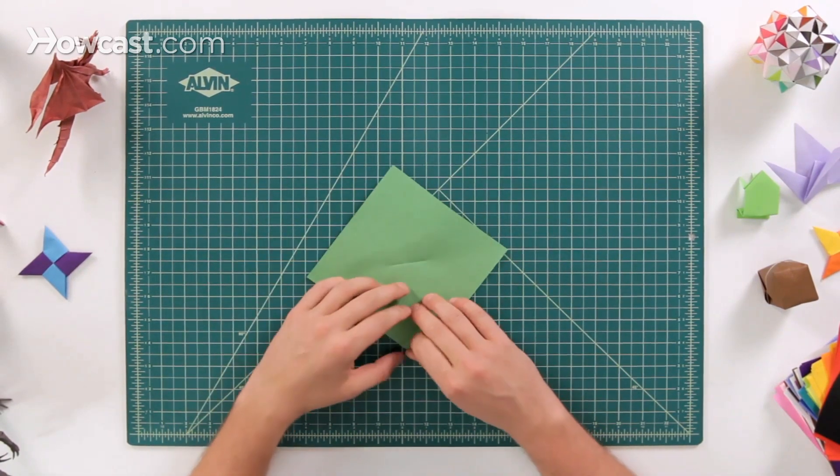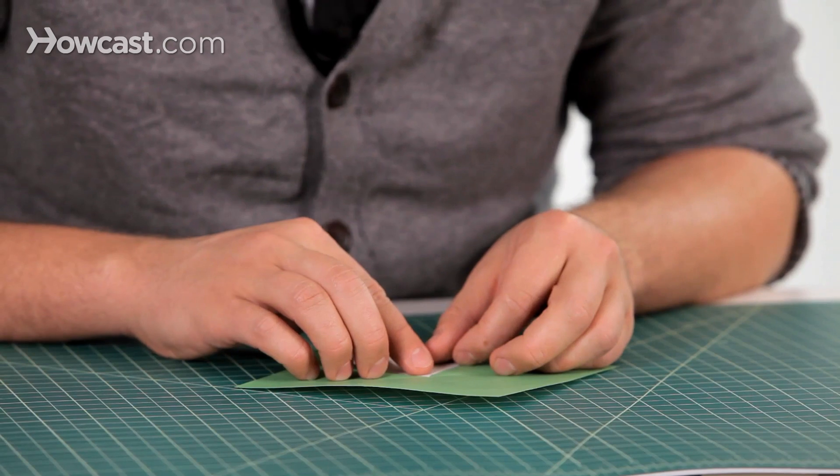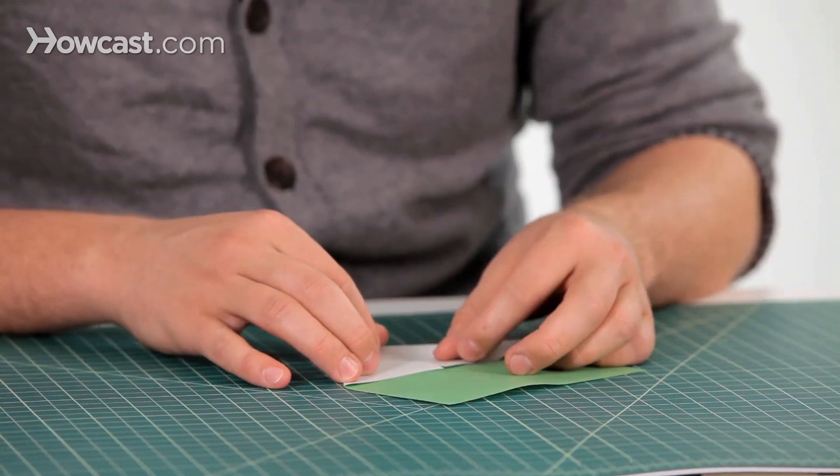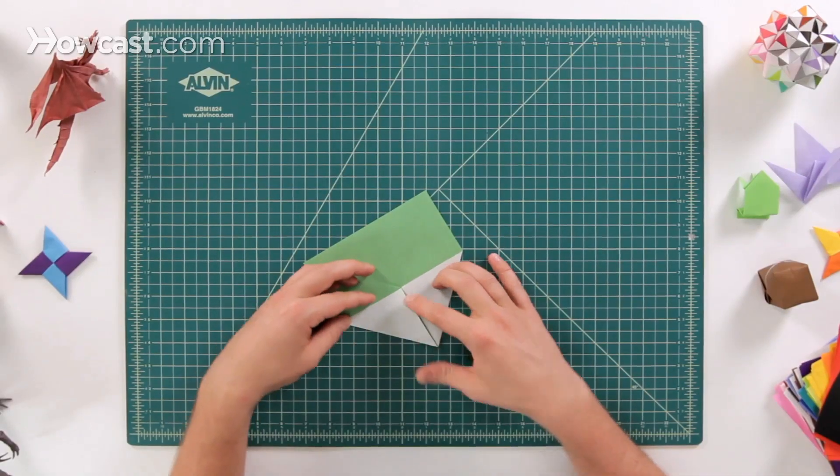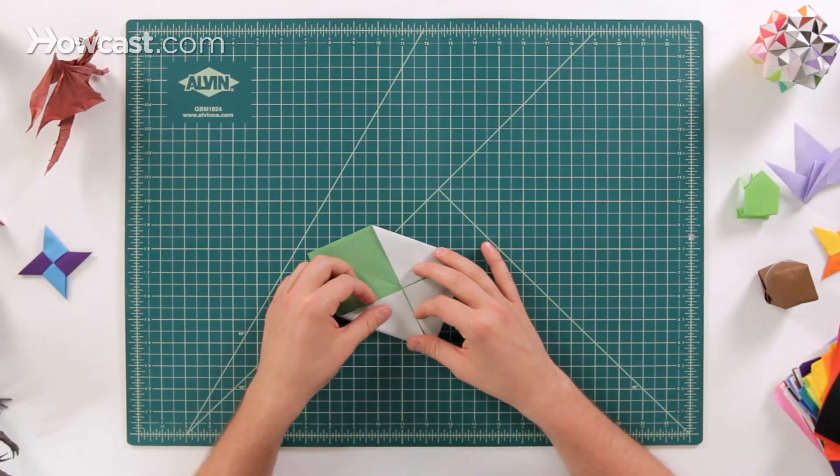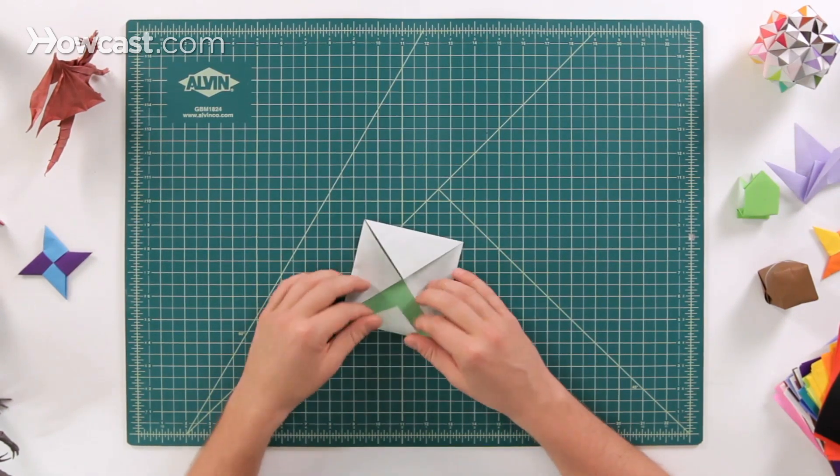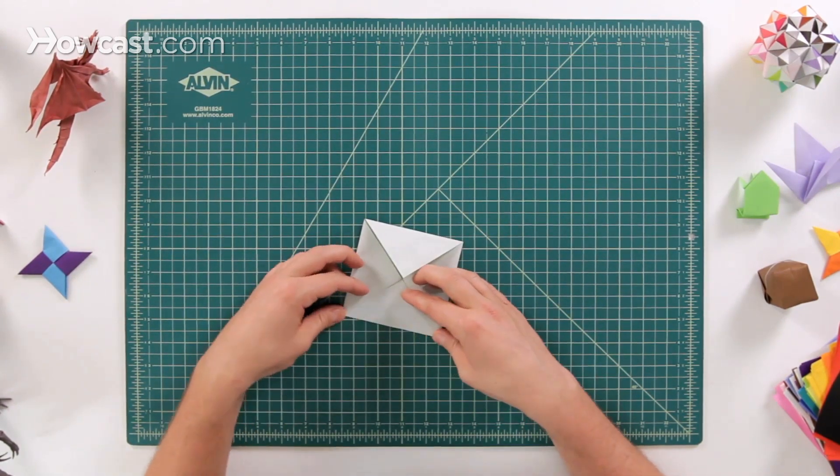Now we're going to take all four corners and we're going to fold those into the center of that intersection. So go all the way around and fold up to the center of the intersection. And this is a blintz base when you fold it the first time.